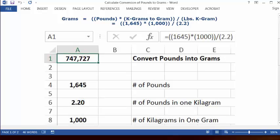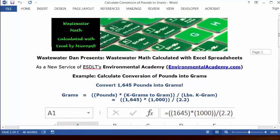And in cell A1 will be your answer: 747,727 grams in 1,645 pounds. So that's your answer.